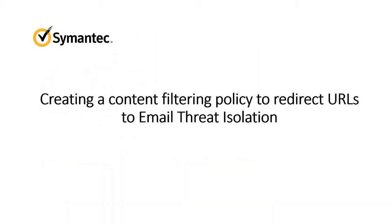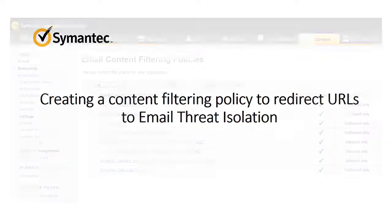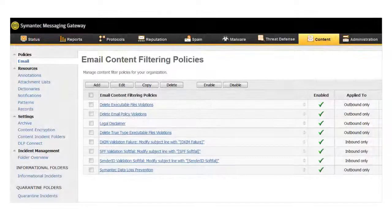Now let's take a look at how to create a content filtering policy that adds email threat isolation protections to Semantic Messaging Gateway. In the Semantic Messaging Gateway Control Center, select Content, Policies, Email, and then click Add.